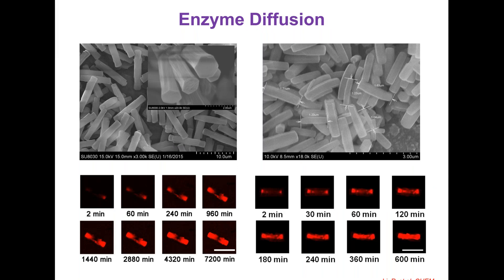What you see is that the larger the crystals, the longer the diffusion time. More importantly, the diffusion happens from the two ends of the crystals, not the sides. That makes total sense because the sides are where the windows are, and the windows are too small for the enzyme to diffuse through. Only the hexagons at the two ends of the crystals allow enzyme diffusion.